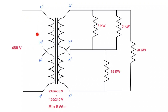We've got a dual winding — two on the high side, two on the low side. It's 284-80 volt to 120-240 volt, depending on how we're connected. We've got the secondary side connected as a three-wire circuit. The loads are: 8 kilowatts on one 120-volt side, 3 kilowatts on the other 120-volt side, 15 kilowatts on one side, and 20 kilowatts on the other side.